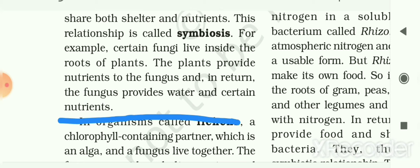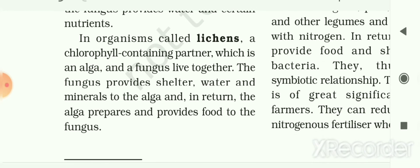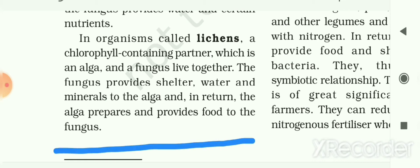The plants provide nutrients to the fungus, and in return the fungus provides water and certain nutrients to the plant. In another example, organisms known as lichens consist of a chlorophyll-containing partner, the alga, and a fungus living together. The alga provides chlorophyll, and the fungus provides shelter, water, and minerals to the alga. In return, the alga prepares and provides food to the fungus through photosynthesis in the presence of sunlight.